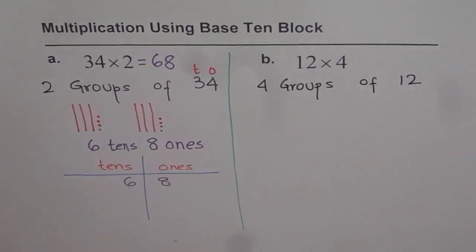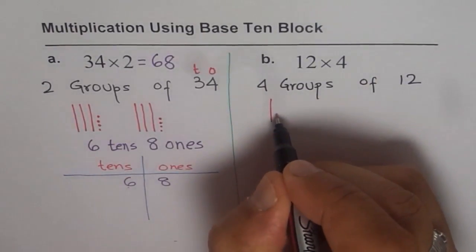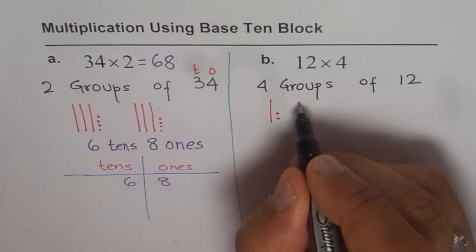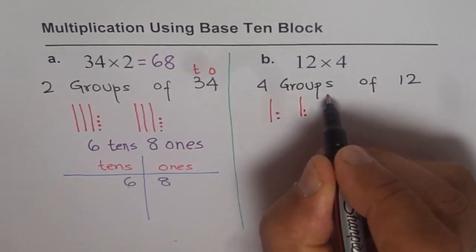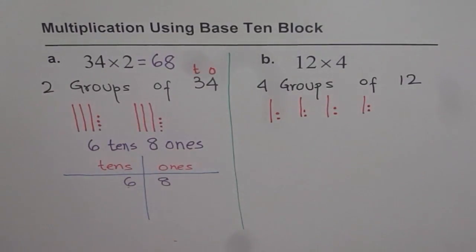So how do you write 12 with base 10 blocks? 12 means 1 ten and 2 ones. We need to make 4 groups. This is my 1st group, 2nd group, 3rd group and 4th group. So we got 4 groups of 12. Let's count them all.